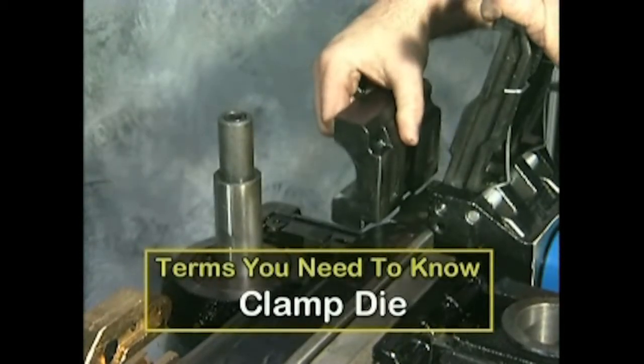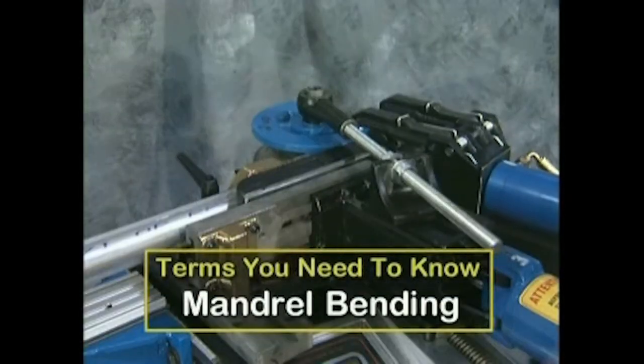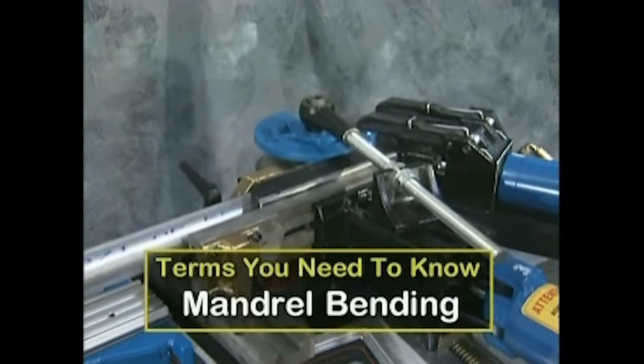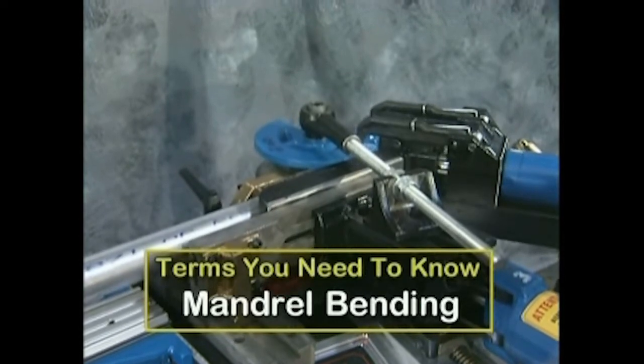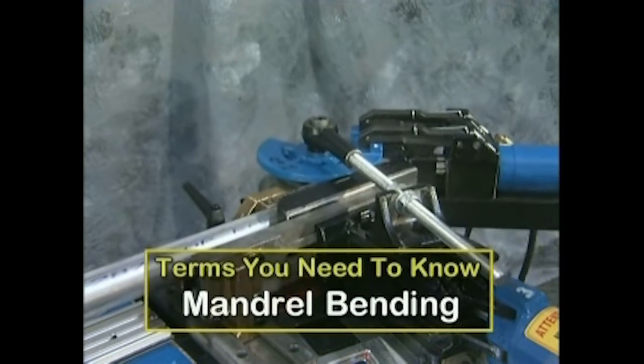The clamp die secures the workpiece during the bend cycle. Mandrel bending, this process can best be described as material being drawn between a stationary die and a fixed radius former to the desired bend angle.